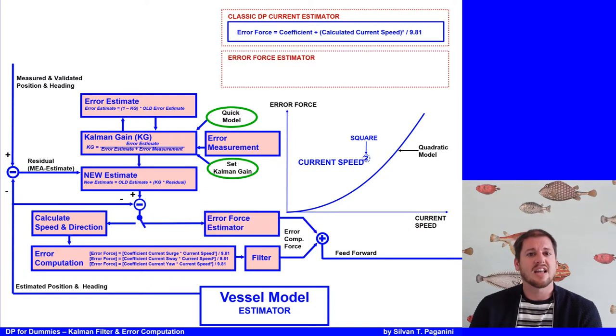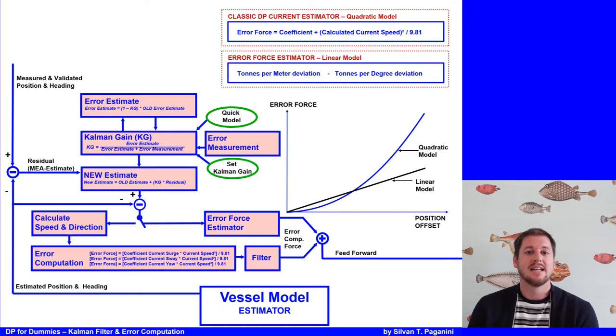To be able to make the DP system act more rapidly to the changing non-external forces while avoiding unstable DP behavior, a new estimator for the residual force has been developed. It is referred as the error force estimator. Instead of calculating a current, the residual forces are calculated directly as an additional force demand. And the trick is, the force demand is linear. In this way, larger Kalman gain can be used without making the system unstable.